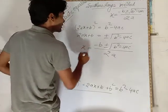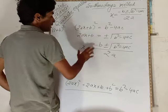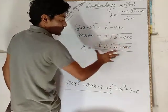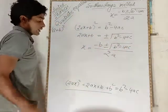Therefore, x equals minus b plus minus under root b² minus 4ac divided by 2a.